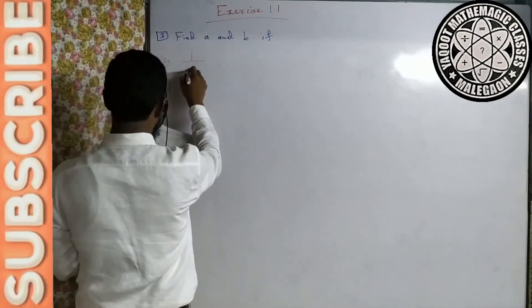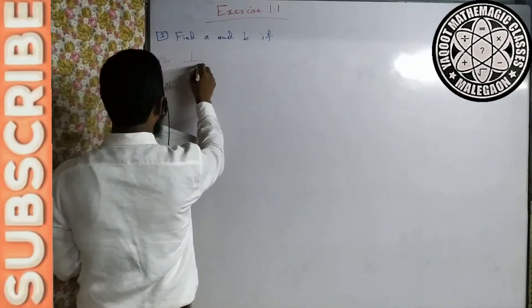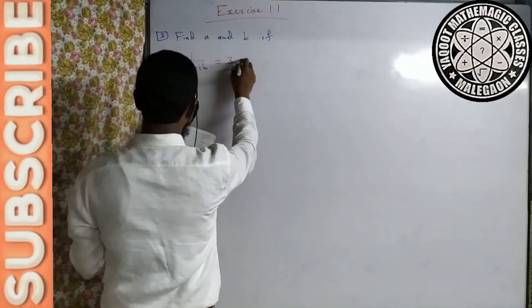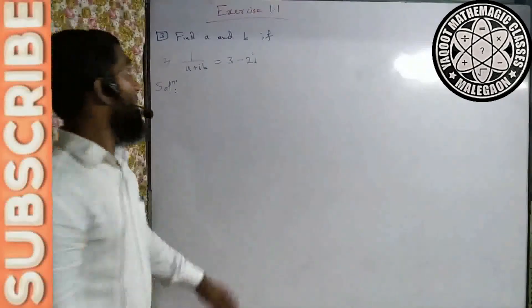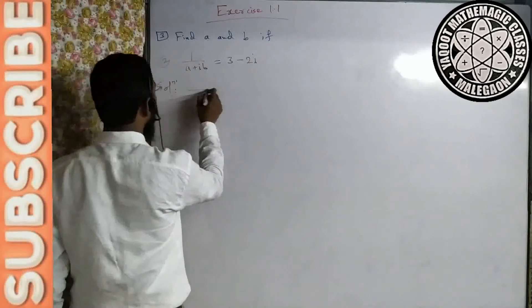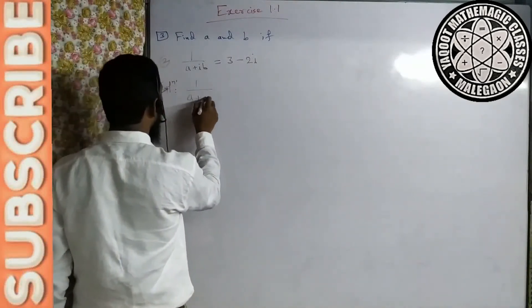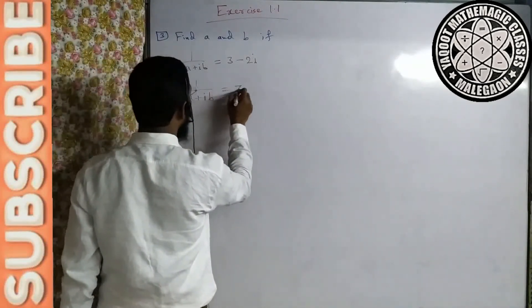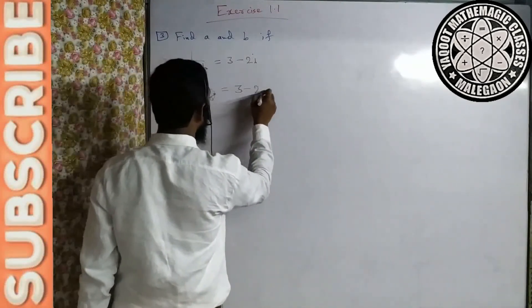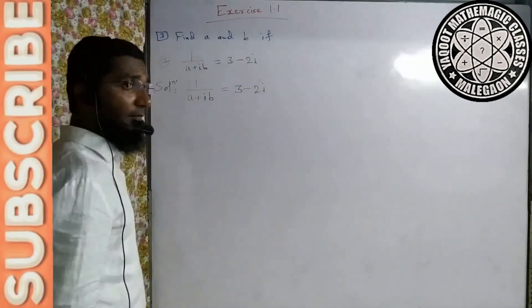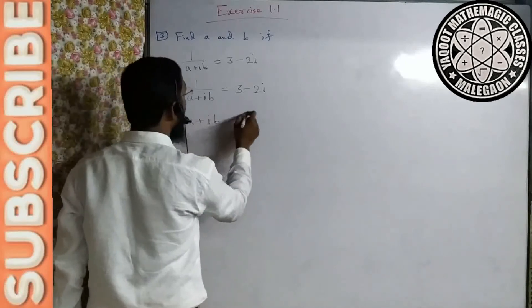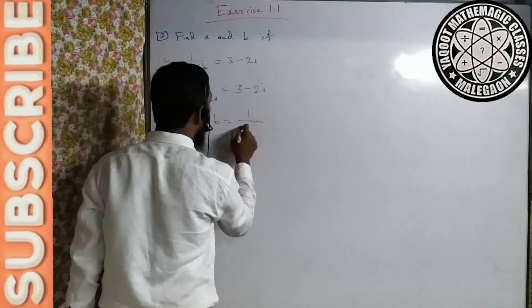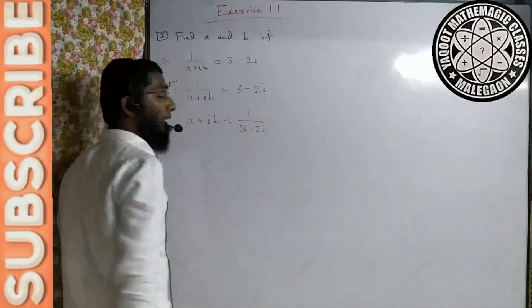1 upon a plus ib is equal to 3 minus 2i. Question: a aur b find karna hai. 1 upon a plus ib is equal to 3 minus 2i — it is given. Hum isko is tarike se likh sakte hain: a plus ib is equal to 1 by 3 minus 2i.